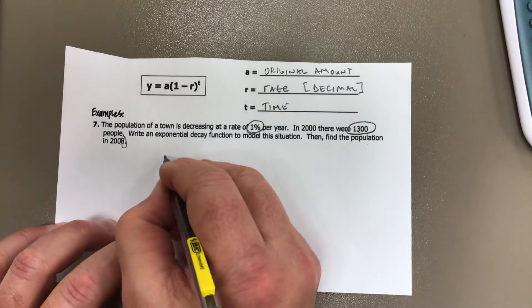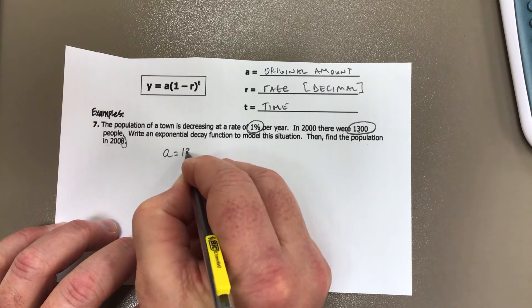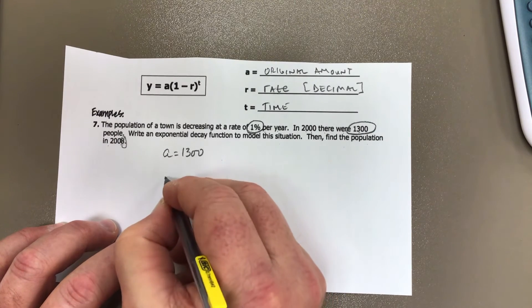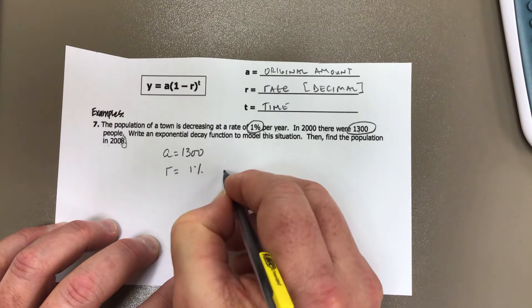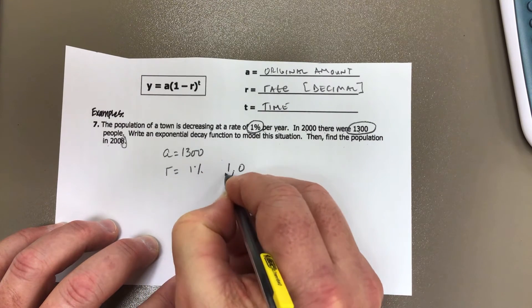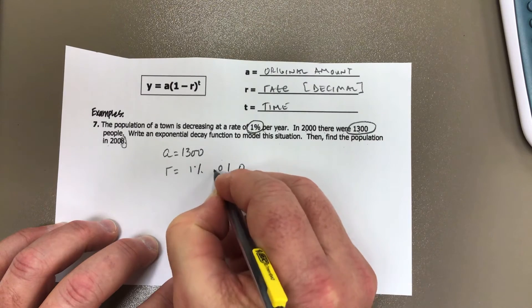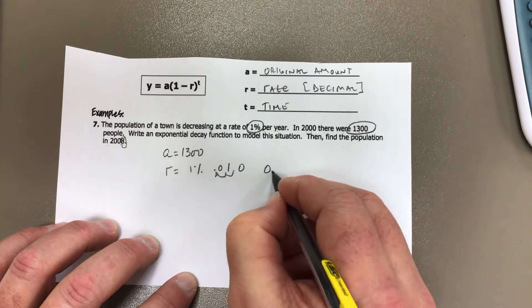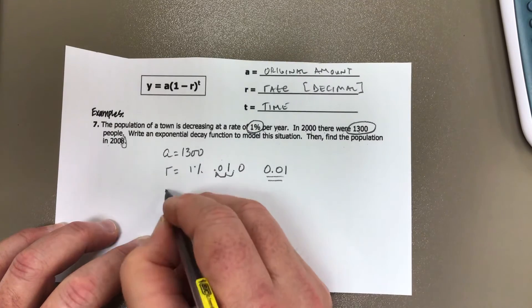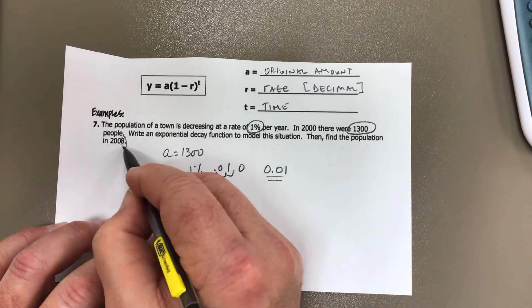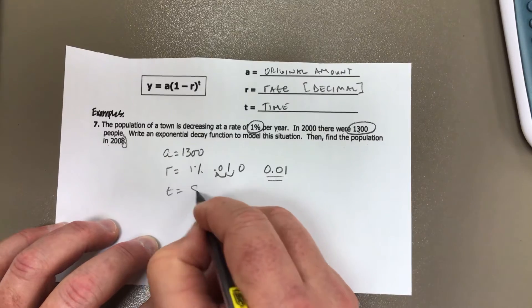So let's just go ahead and do that. So a is going to be 1,300. The rate is going to be 1%, so we have to change that. So 1.0, we move the decimal over to the left two spots, so this is 0.01. And the time is from 2008 to 2000, which is eight years. So the t is going to be eight.